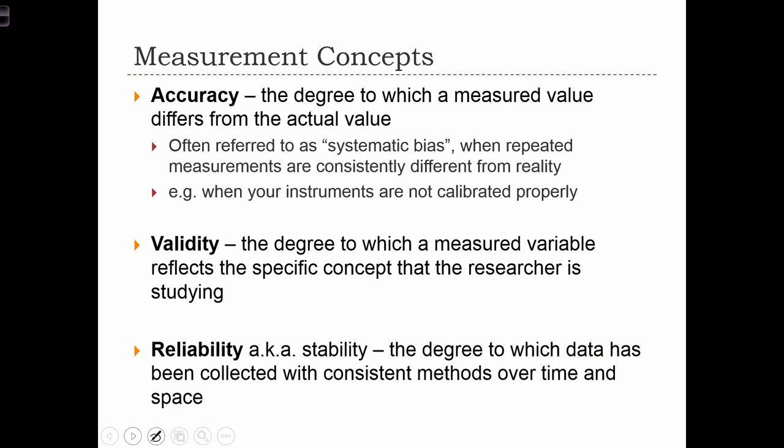The next measurement concept is accuracy — the degree to which a measured value differs from the actual value. This is often referred to as systematic bias, when we repeat our measurement and consistently see the same amount of measurement error. That often happens when instruments aren't calibrated properly. If I have a scale that incorrectly adds half a pound to each person weighed, I'm systematically going to have a variable that is not very accurate — there will be a half-pound bias in all measurements.